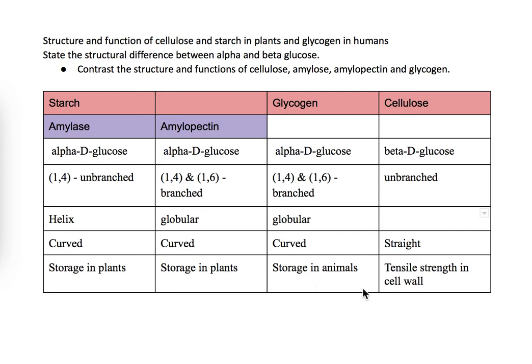You can connect this with the process of maintaining blood glucose levels. When there's a lot of glucose, insulin causes glucose to be converted to glycogen for storage in the liver. So glycogen is storage in animals — specifically in humans, in the liver.